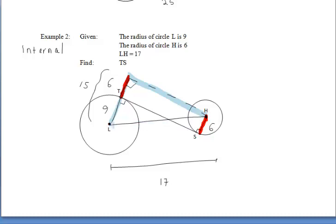The leg of the right triangle is 15 and the hypotenuse is 17. This is an 8-15-17 Pythagorean family. Since opposite sides of our rectangle are congruent, the opposite side TS is also 8, which is the length of our common internal tangent.